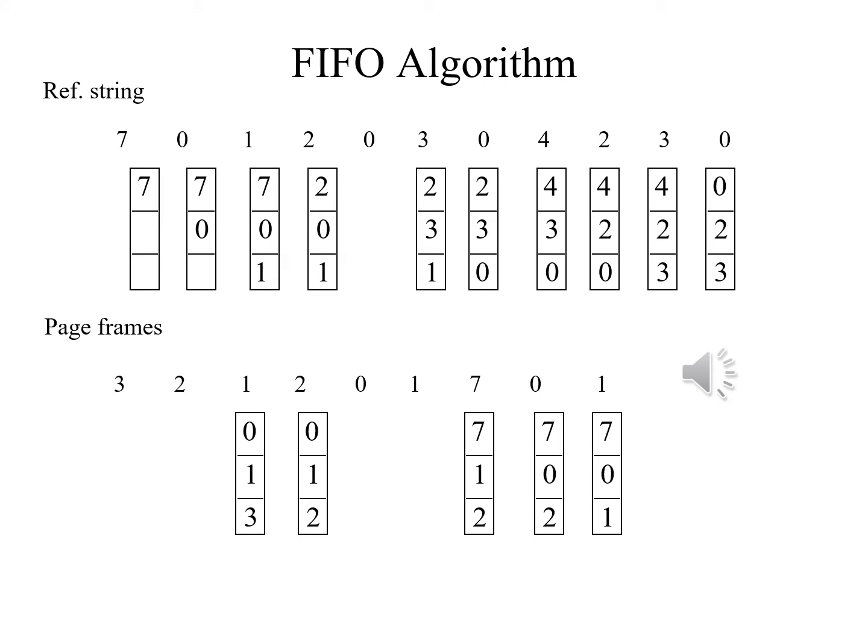Our entire reference string is: 7, 0, 1, 2, 0, 3, 0, 4, 2, 3, 0, 3, 2, 1, 2, 0, 1, 7, 0, 1. Obviously, 0, 1, and 2 seem to show up more often than the others, but the order in which they come makes a big difference in terms of what should come next.